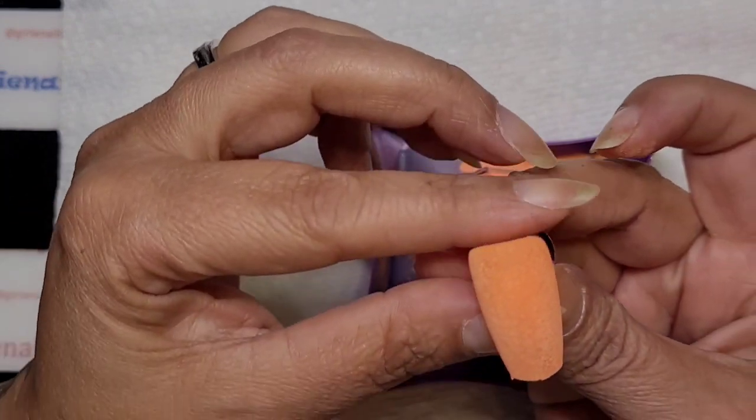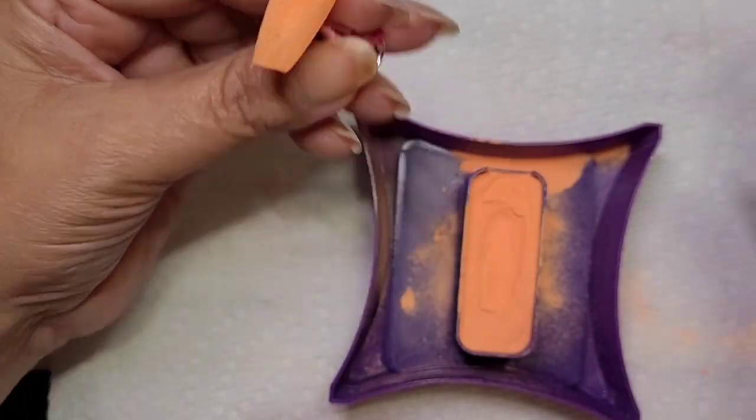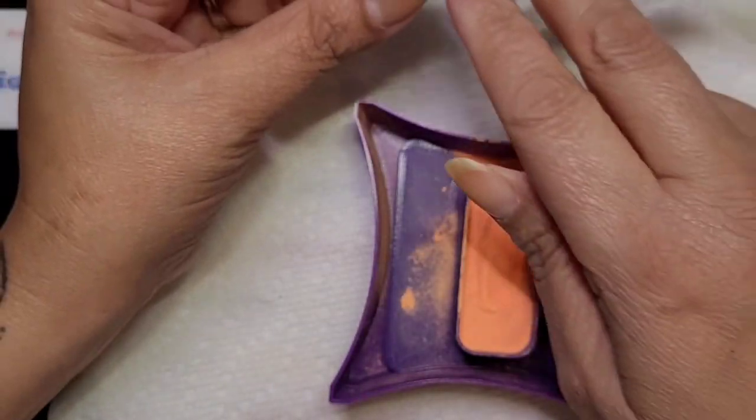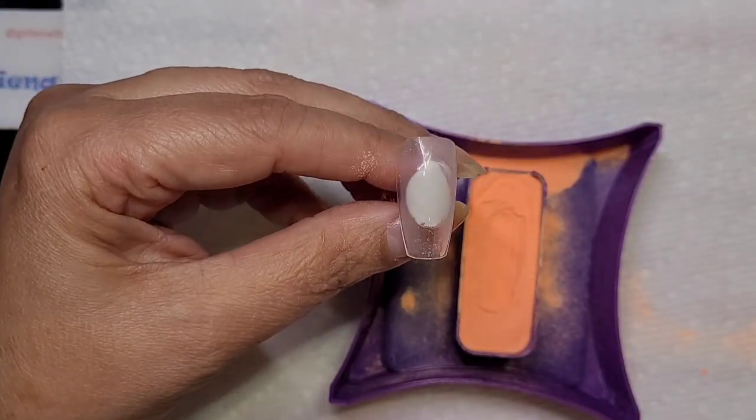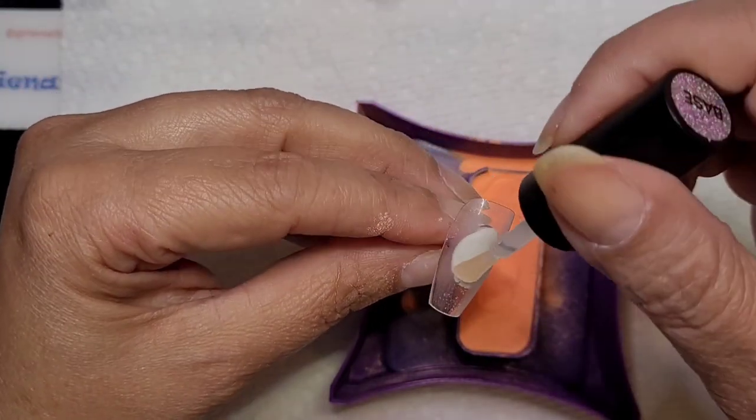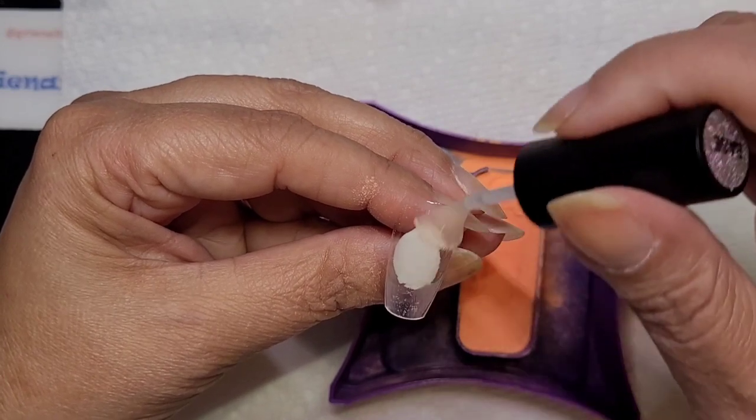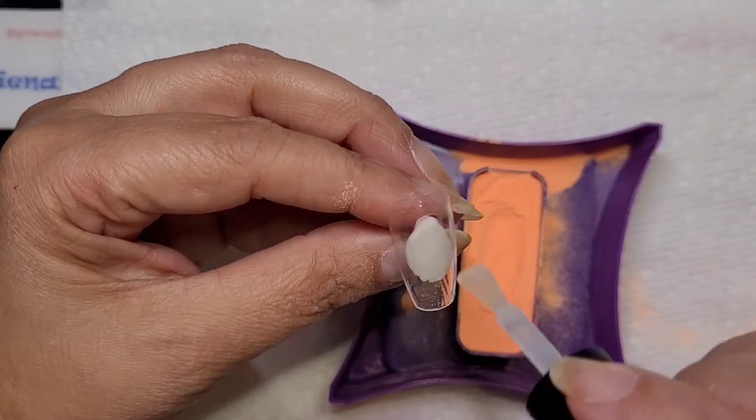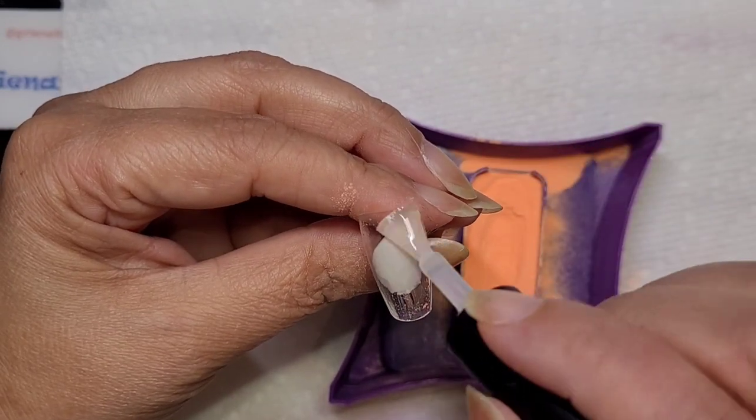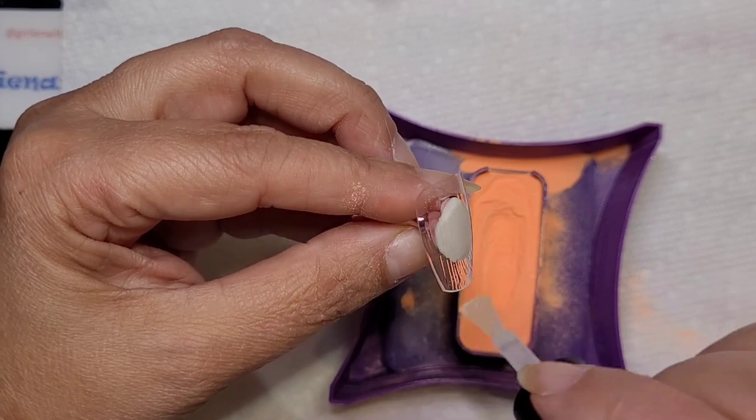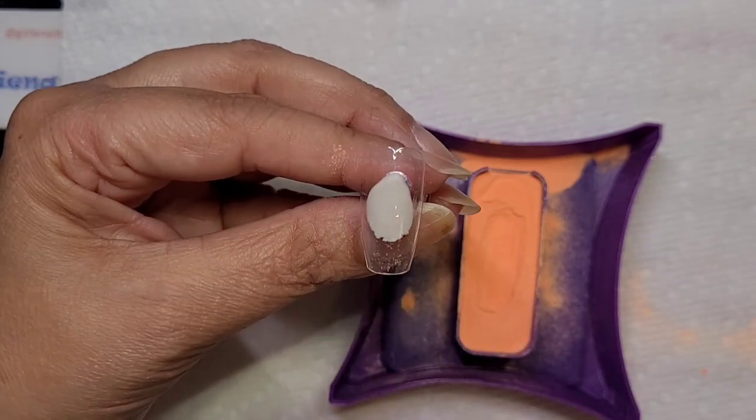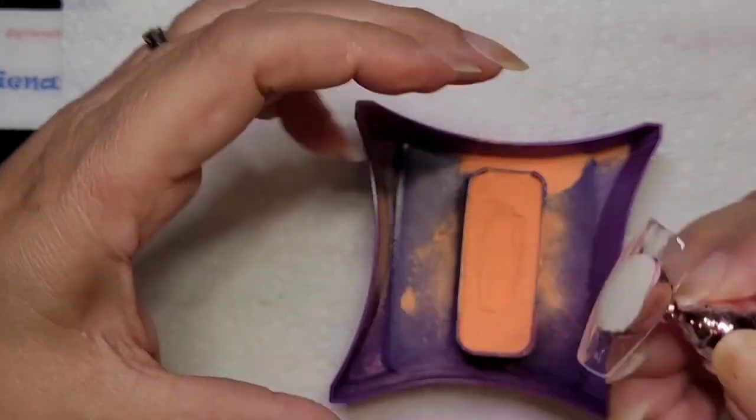So today we are going to do some pumpkins. This one glows, so I was super happy. I thought about it today - I want orange because I wanted to do some pumpkin nails and I do have orange polish.